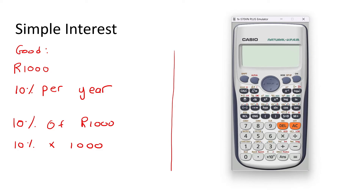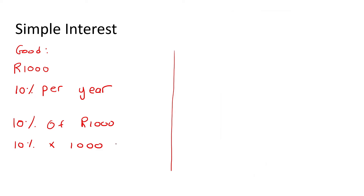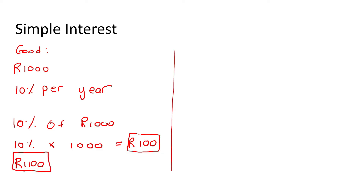Some learners like to first work out what 10% is — it's 0.1 — then say 0.1 multiplied by a thousand. All of those methods give us 100 rand. The point is, after one year you are going to earn 100 rand interest — that's like a bonus. So how much money do you have now? You will have 1,100 rand. You started with a thousand rand, invested it, earned 100 rand, and now you have 1,100 rand. So that's the way that interest can be very good.